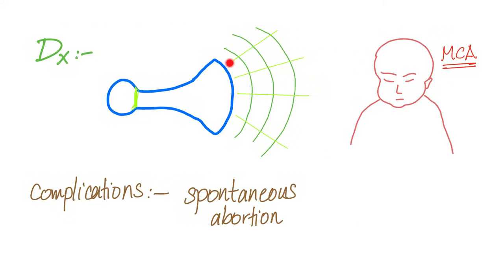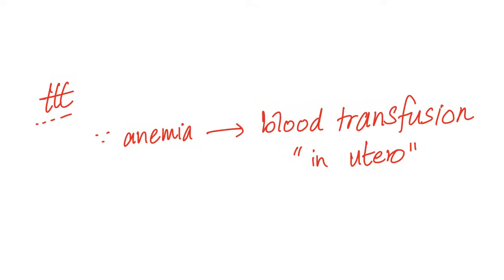Diagnosis of hydrops fetalis: ultrasound, and now we can also do middle cerebral artery Doppler, which is very useful. Complications include spontaneous termination. Treatment: you know how to treat severe anemia — blood transfusion in utero, because the baby may die in utero and we would like to prevent it.